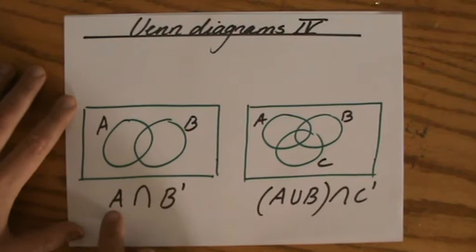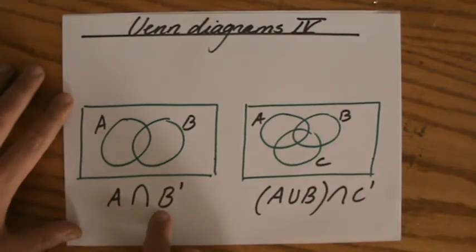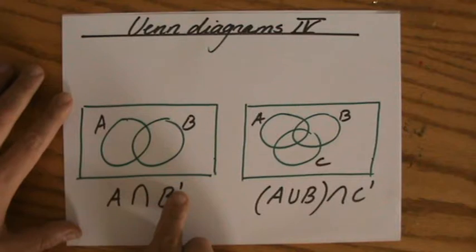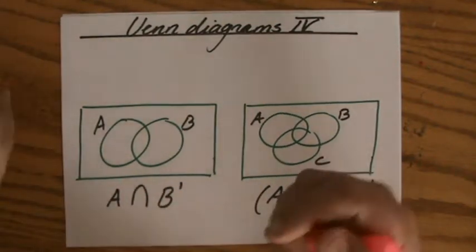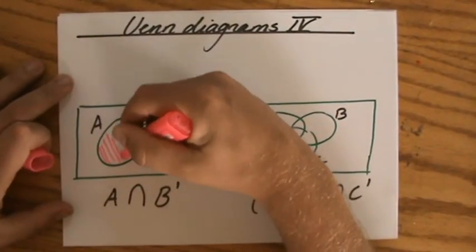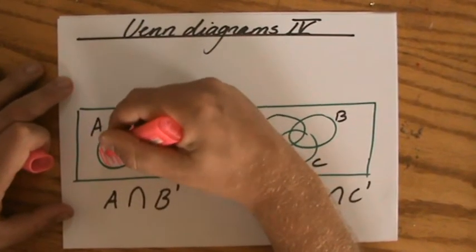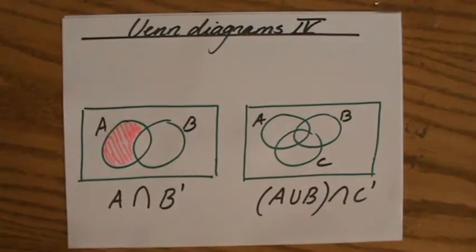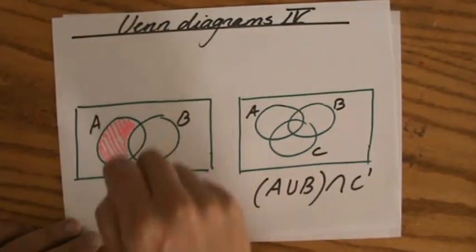What does this mean? This means A intersecting with the complement set of B, which means everything outside of B and it has to intersect with set A. So we will be talking about this part. That's what I'll be shading because that is set A intersecting with everything outside of B.